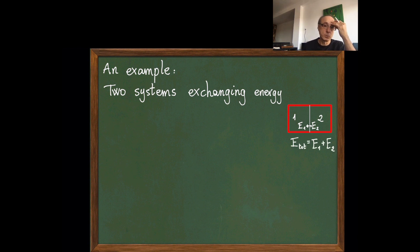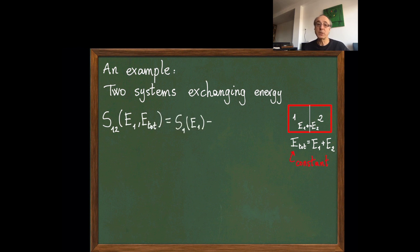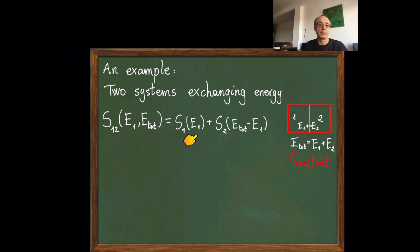If I consider that there are no changes in the internal structure of the systems, the energy is the only variable. And it's actually just a single variable because the total energy is constant—the system is isolated. So there is only a single variable in the system, which is E1, because E2 is given by E1 and the total energy. So then I have my entropy, and I can use additivity: it is the entropy of system one plus the entropy of system two.